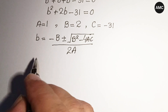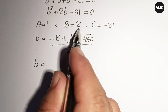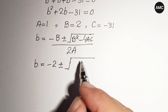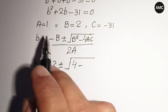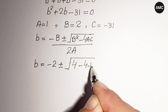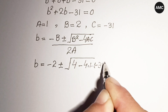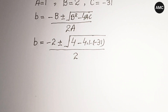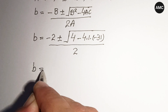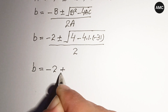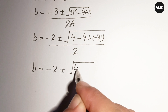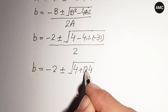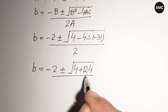Substituting our values: b equals negative 2 plus or minus square root of 2 squared minus 4 times 1 times negative 31, all over 2 times 1, which is 2. Inside the square root we have 4 plus 124, giving us 128, all over 2.